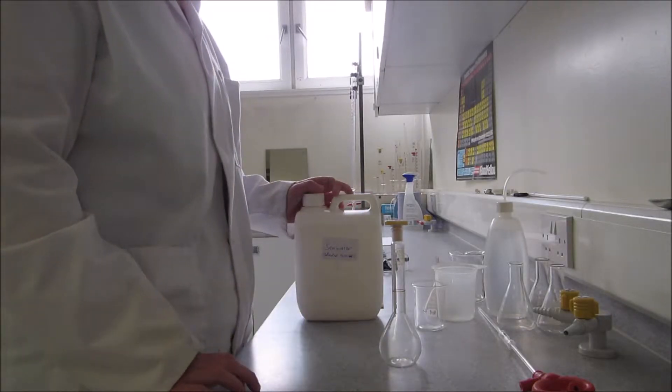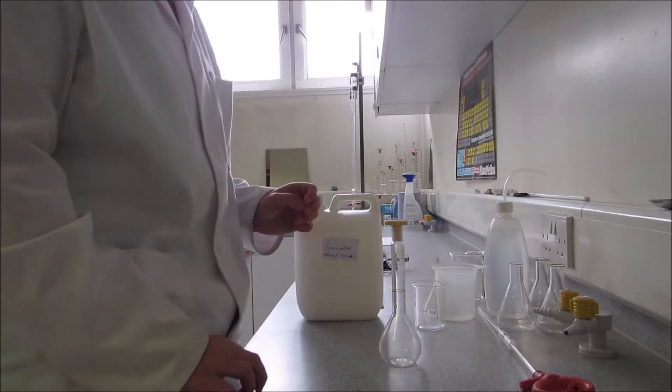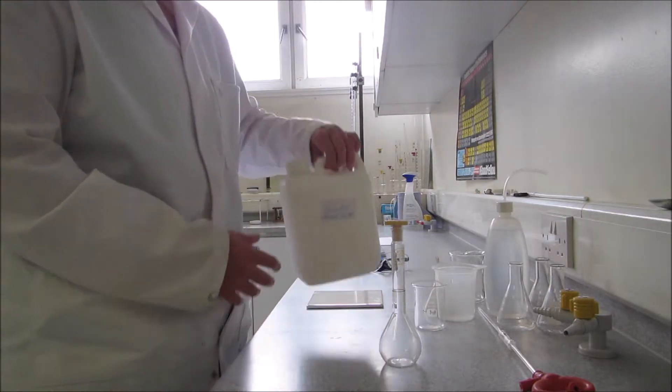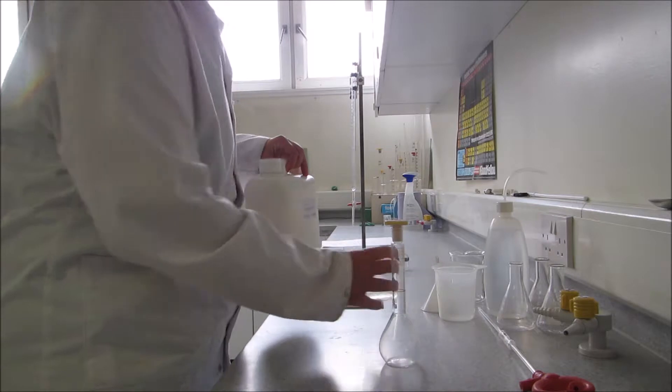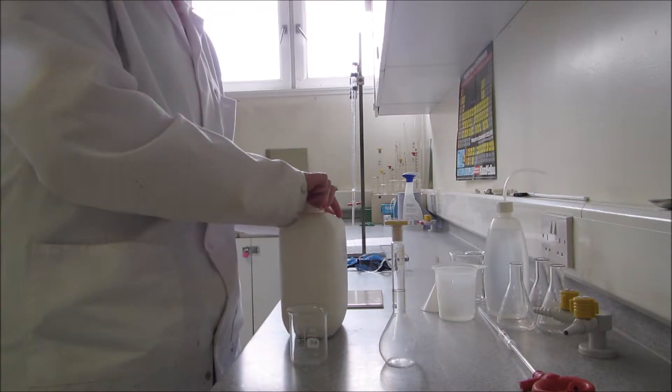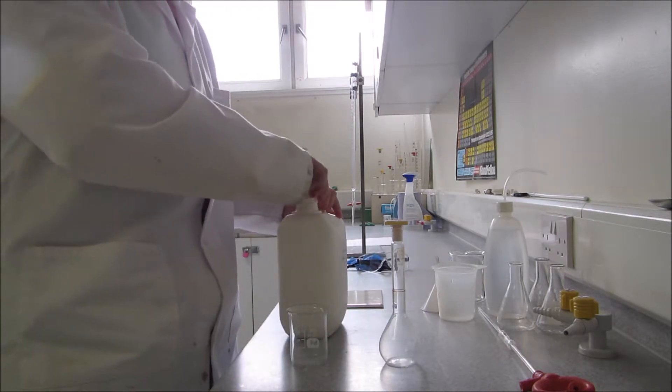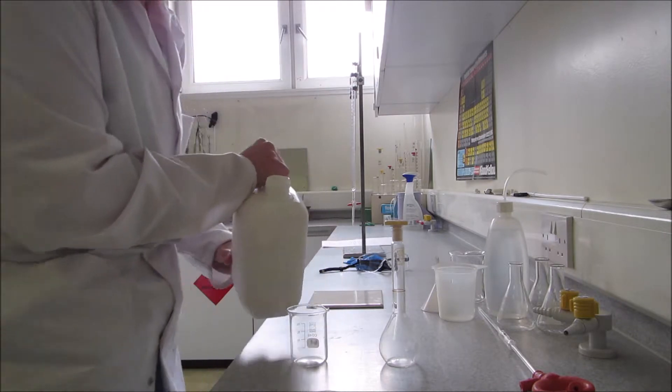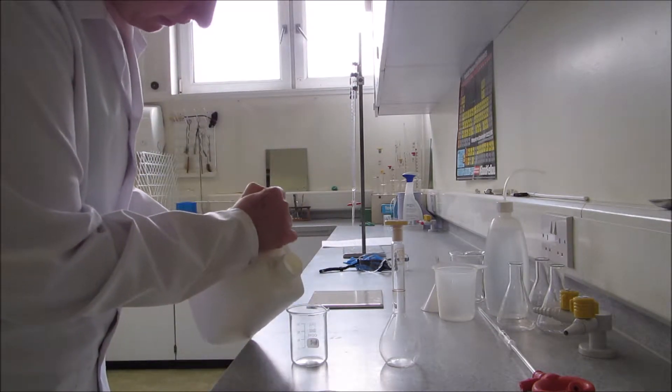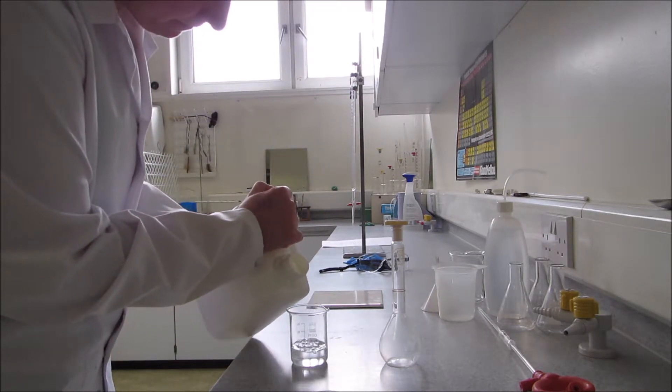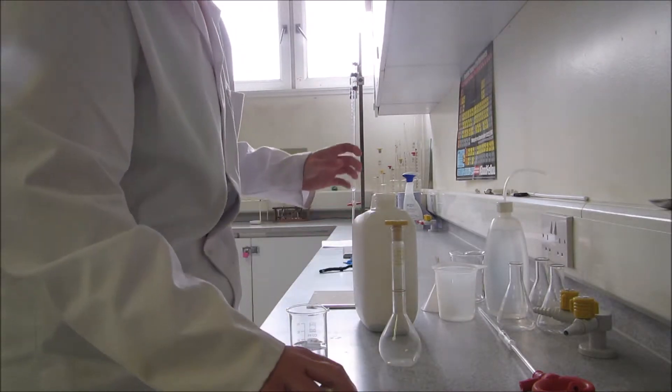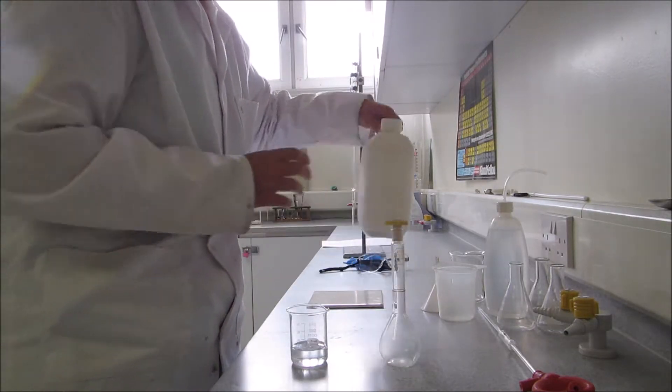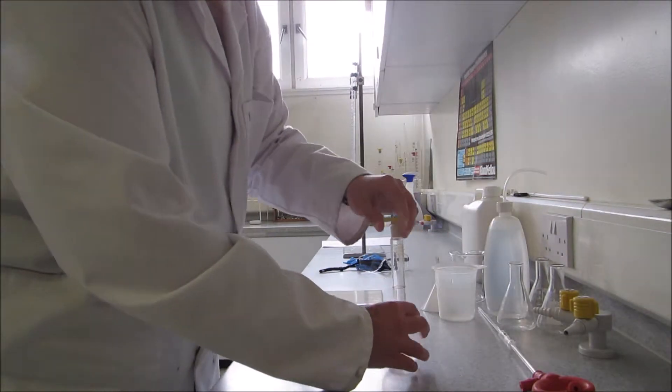This practical will show you how to estimate the chloride content of seawater. Firstly, a seawater sample was collected. This is a very high level of chloride ions, so I want to carry out a dilution. I'll just put a bit of the seawater into a beaker and I'm going to do a 1 in 10 dilution.